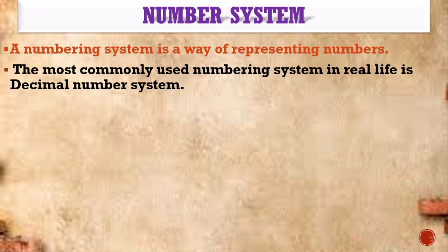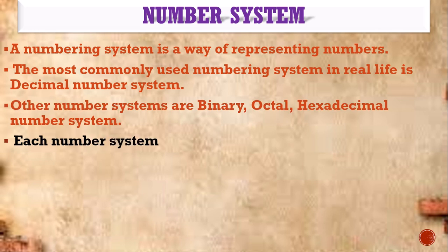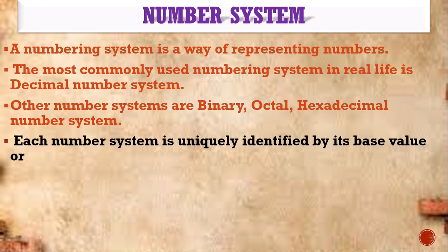The most commonly used number system in real life is the decimal number system. All the numbers we use in regular life — 1000, 1024, 5, 10 — all these numbers are called decimal numbers. Other number systems are binary, octal, and hexadecimal. These are the additional number systems we are going to study. Each number system is uniquely identified by its base value or radix. The four number systems are binary, decimal, octal, and hexadecimal.